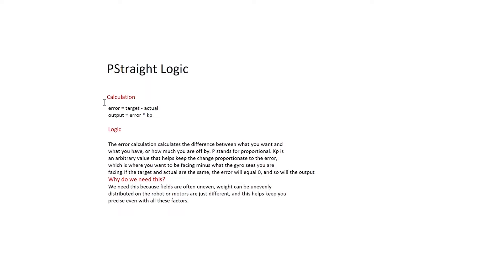The calculation is: error equals target — or where you want to be heading — minus actual, what the gyro sees that you're actually going. Output, how much you're going to change your steering by, is equal to error times kp, which is just an arbitrary value. Because p stands for proportional, kp is just an arbitrary value that helps keep the change proportionate to the error. And if the target and the actual are the same, meaning that error will be equal to zero, so will the output be — because no matter what kp is, anything times zero will be zero.